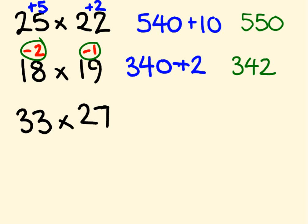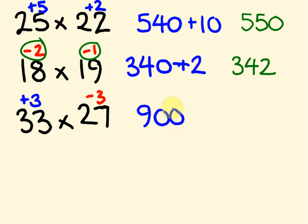For 33 times 27 using base 30: 33 is 3 more than 30, and 27 is 3 less. Cross addition: 33 take 3 is 30. Multiply by 3: 30 times 3 is 90, so 900. The deviations are plus 3 and minus 3, different signs, so minus 3 times 3 is minus 9. So 900 minus 9 gives 891.